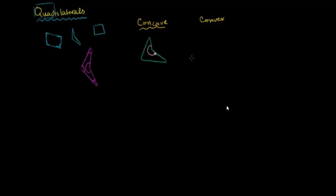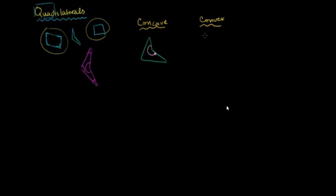The other type of quadrilateral is when all of the interior angles are less than 180 degrees. If this angle was exactly 180 degrees, then these wouldn't be two different sides — it would just be one side, and that would look like a triangle. But if all of the interior angles are less than 180 degrees, then you are dealing with a convex quadrilateral. This convex quadrilateral would look like that one right over here.